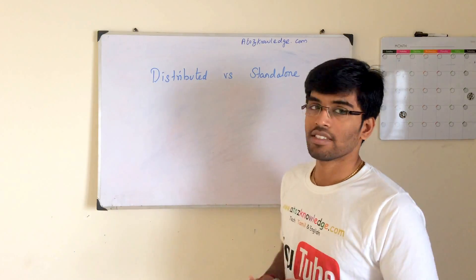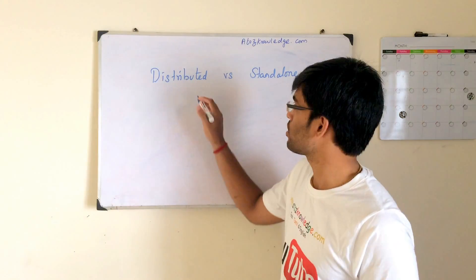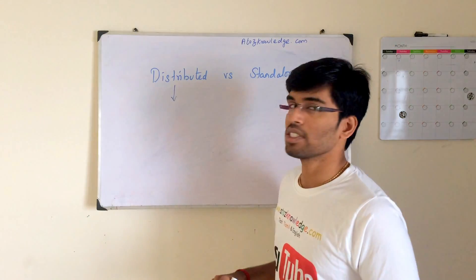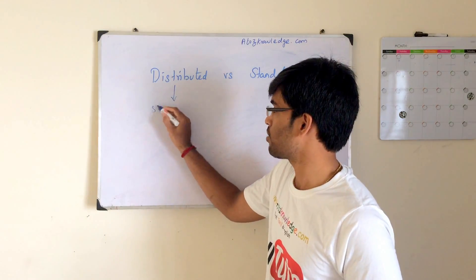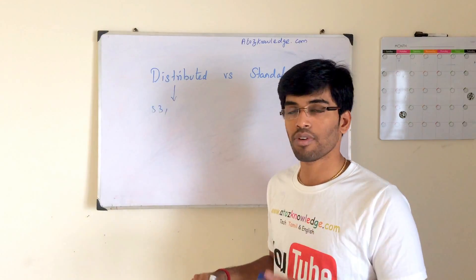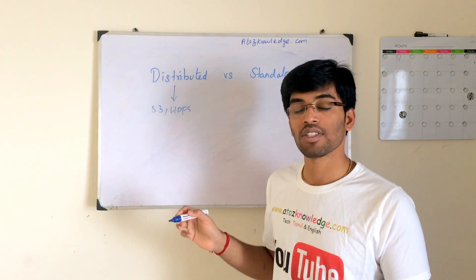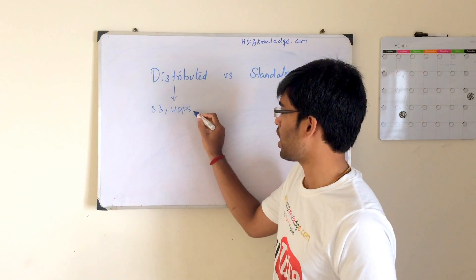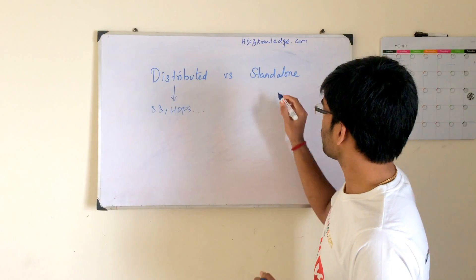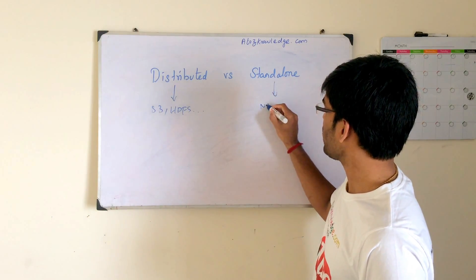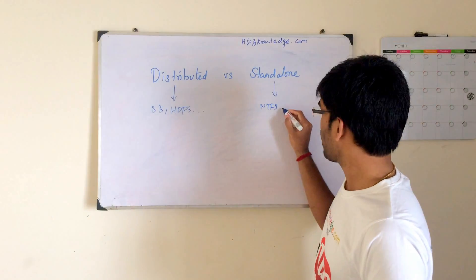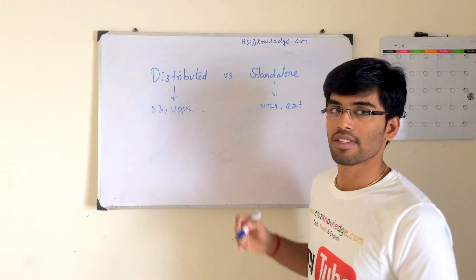So what is exactly the difference between these? When I say distributed, I am just giving some examples first of all. We can say some distributed file systems in the market - we have something called S3 which is Amazon file system, and then we have HDFS, the Hadoop distributed file system, and many other things. And then with respect to standalone, I can say NTFS which is Windows file system and EXT which is your Linux file system.